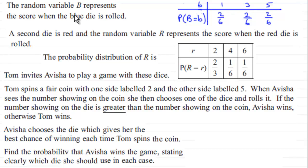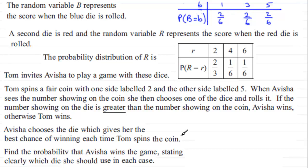From the previous part of the question, we've got the score on the blue die represented in a probability distribution, and we've also got the probability distribution for R, the score on the red die. If this is a question you'd like to try, pause the video now and come back to check your solution. Okay, welcome back. So to do something like this, for Avisha to win, let's work out the probability that she wins — what's got to happen?